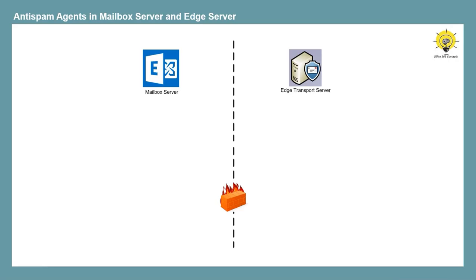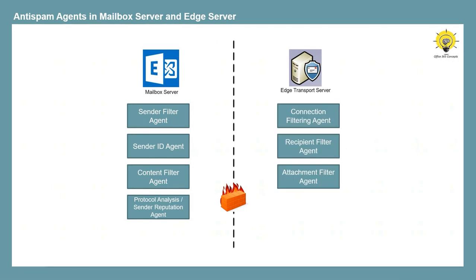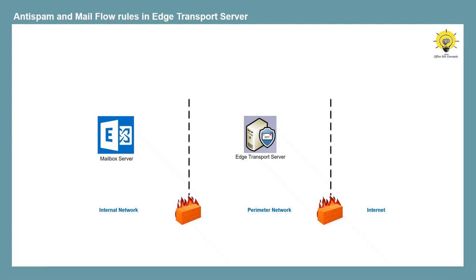Apart from this benefit, Edge Transport Server provides anti-spam agents. The mailbox server has four anti-spam agents: sender filter agent, sender ID agent, connection filter agent, and protocol analysis agent or sender reputation agent. In Edge Transport Server, you get three more anti-spam agents: connection filtering agent, content filtering agent, and attachment filter agent. Spammers use a variety of techniques to send spam into your organization. Edge Transport servers help prevent users from receiving spam emails by providing a collection of agents that work together to provide different layers of spam filtering and protection. With the help of these spam agents, you can block spam emails on the perimeter network, adding an extra layer of security for your on-premise email environment.